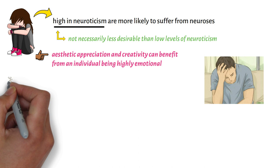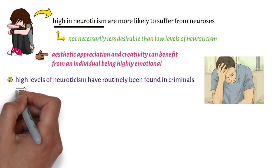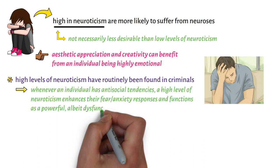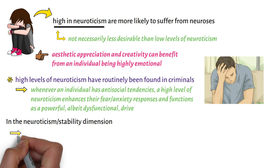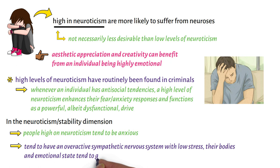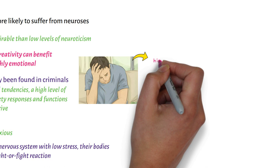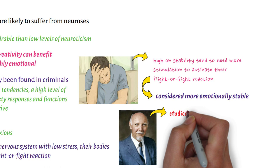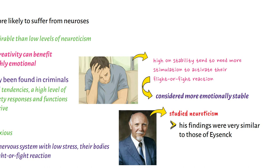On the clearly negative side, high levels of neuroticism have routinely been found in criminals, perhaps because whenever an individual has antisocial tendencies, a high level of neuroticism enhances their fear-anxiety responses and functions as a powerful, albeit dysfunctional, drive. People high on neuroticism tend to be anxious, with an overactive sympathetic nervous system, and their bodies tend to go into a flight-or-fight reaction under low stress. Cattell also studied neuroticism, and his findings were very similar to those of Eysenck.